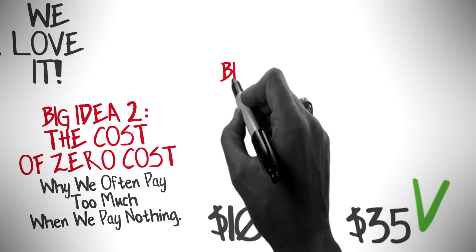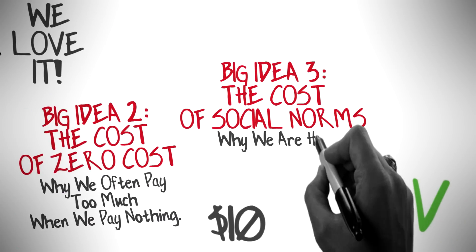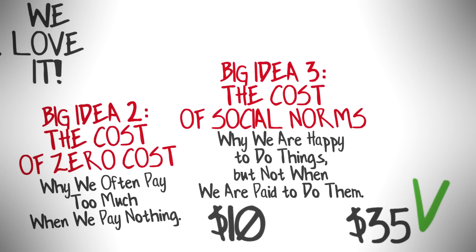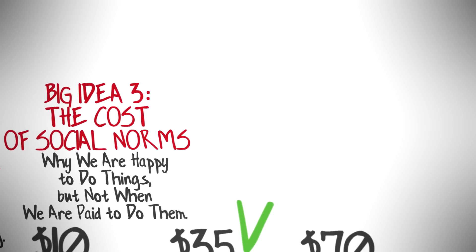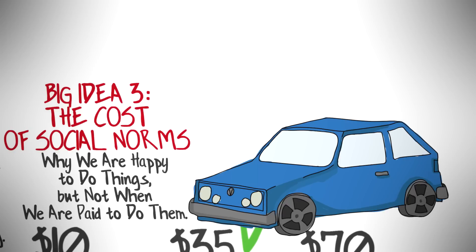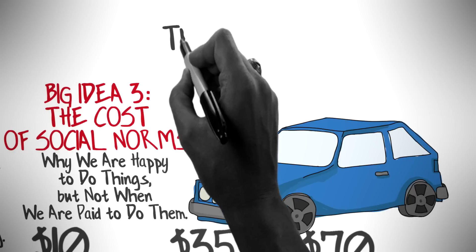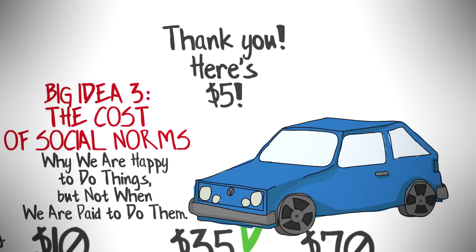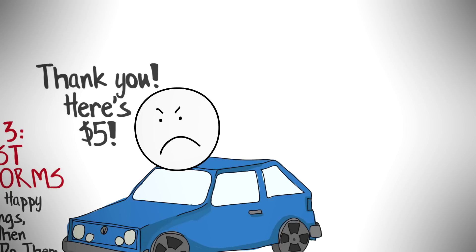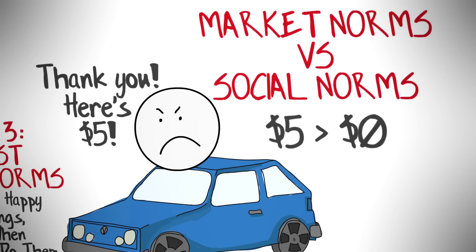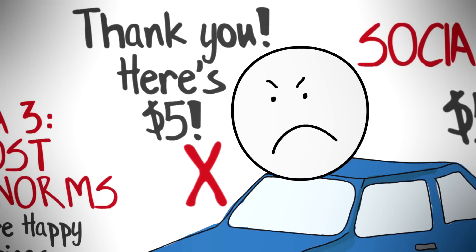The cost of social norms: why we're happy to do things but not when we're paid to do them. Imagine I'm your neighbor and I need help with my car. You're walking by and you offer to help. Now imagine I tell you thank you and I offer you five dollars when you're done helping me. That will make you angry and pissed off. Now here's the thing, from a traditional economic perspective five dollars is much better than zero dollars, but we're confusing market norms with social norms. I could offer you a thousand dollars to help me and you will gladly help. I could ask you as a human being in need and you will also help, but as soon as I pay you five dollars I've messed everything up.